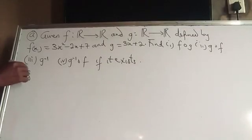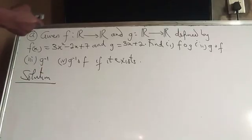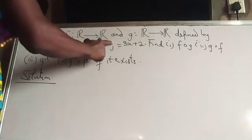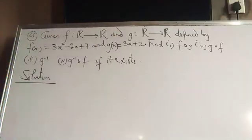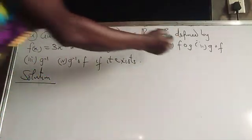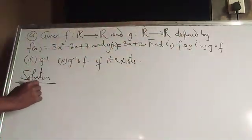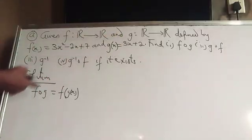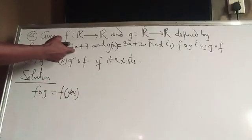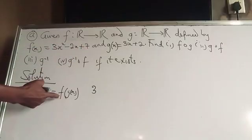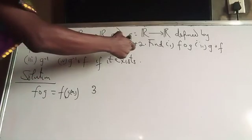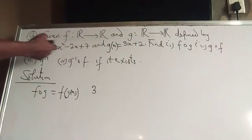Solution. The two values given are functions of the set of real numbers. F(x) = 3x² - 2x + 7, and G(x) = 3x + 2. To find F of G, that is F(G(x)), you insert the function G(x) into F. Wherever you see X in F, you replace that value by 3x + 2. So that gives 3(3x + 2)² - 2(3x + 2) + 7.